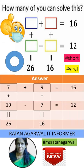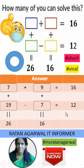When you add 7 and 9, you get 16. And when you add 7 and 9 again, you get 16. Then 19, then 20.